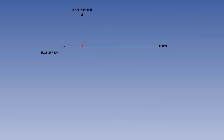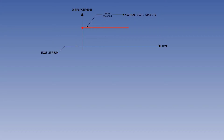Let's have a look at neutral dynamic stability. The red dot is displaced from equilibrium, and when the disturbing force is removed, the initial reaction is to stay displaced from equilibrium. This illustrates neutral static stability. Over a period of time, the dot continues to stay equally displaced from equilibrium, illustrating neutral dynamic stability. We have neutral static and neutral dynamic stability.